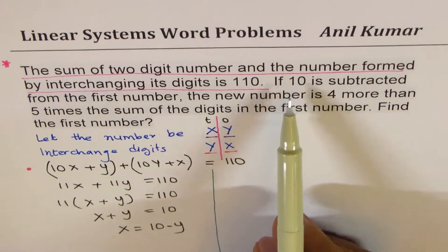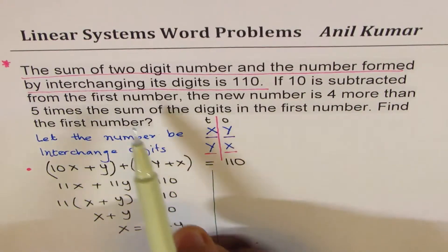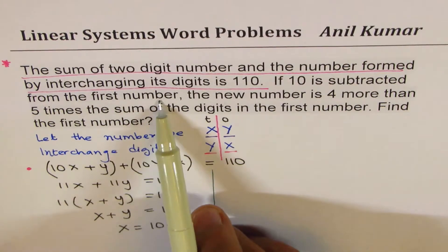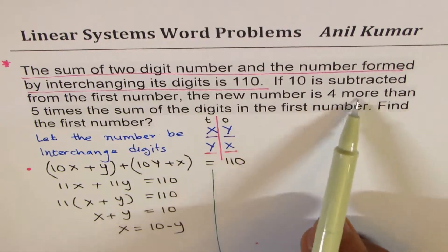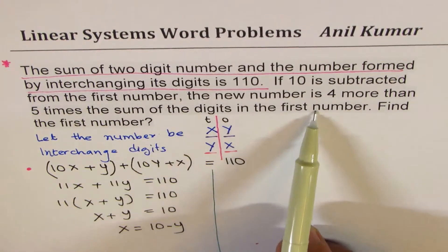Now, let's continue. If 10 is subtracted from the first number, the new number is 4 more than 5 times the sum of digits of the first number.